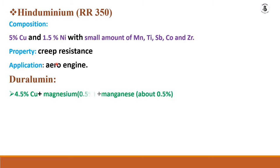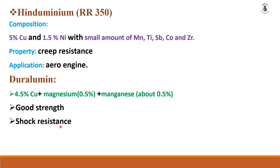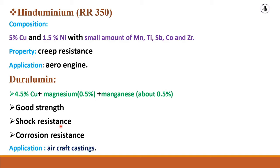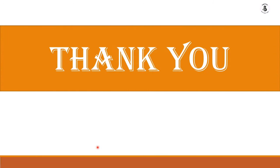Duralumin contains 4.5% copper, 0.5% magnesium, and 0.5% manganese. It offers good strength, shock resistance, and corrosion resistance. Its main application is aircraft castings, where high-strength, low-weight materials are required, making it the best option for that purpose. I hope you can understand this — if you like this video, please subscribe and share. Thank you so much and keep watching.